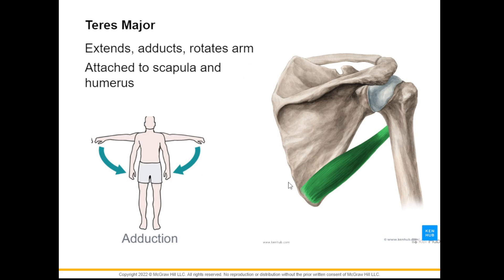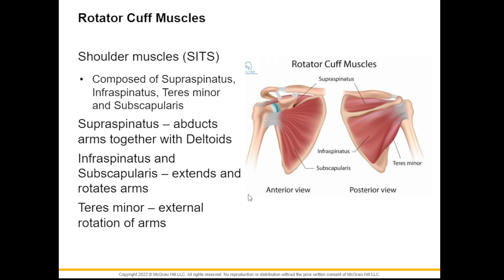We also have a group of muscles called rotator cuff muscles. The mnemonic is SITS: supraspinatus, infraspinatus, teres minor, and subscapularis. The rotator cuff muscles allow us to rotate our shoulder. The supraspinatus is found at the back on top of the shoulder spine; its job is to abduct — meaning to pull the arm away from the body — together with the deltoids. The infraspinatus function is to extend and rotate the arms, and the teres minor provides external rotation of the arm.